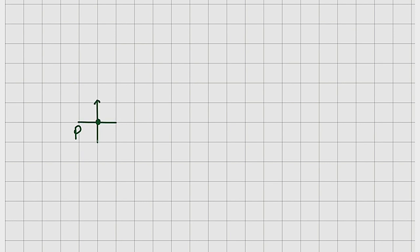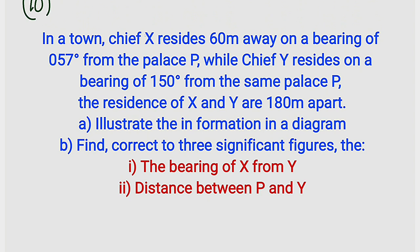Let us assume we have a point right here, which is point P. You should know that every single point contains a north pole. I am going to draw all four cardinal points: north, south, east, and west. We are going to measure 57 degrees from P down to X. Each quadrant between cardinal points is 90 degrees. Since 57 is less than 90, we are going to do a rough sketch, not to scale.